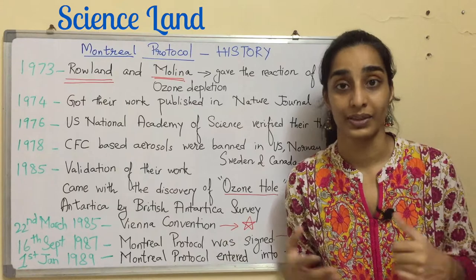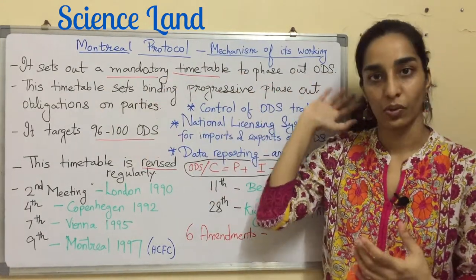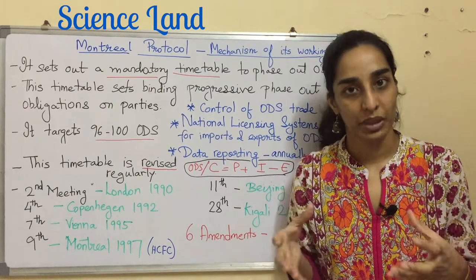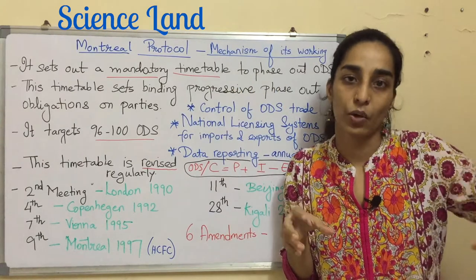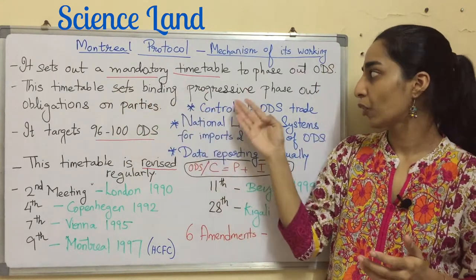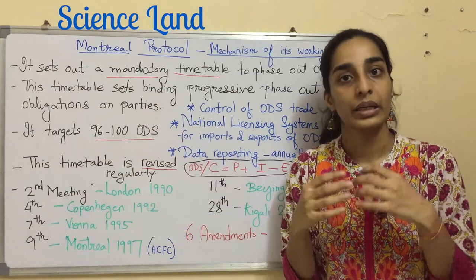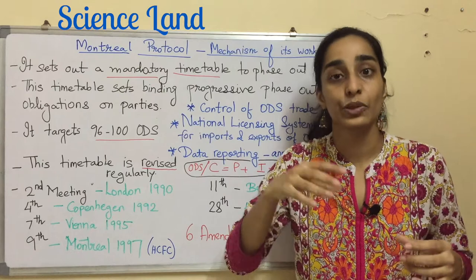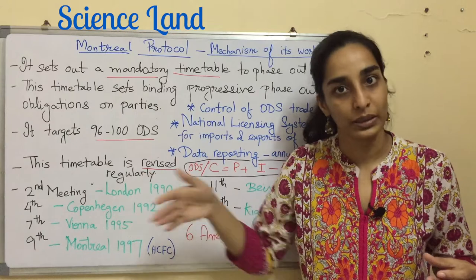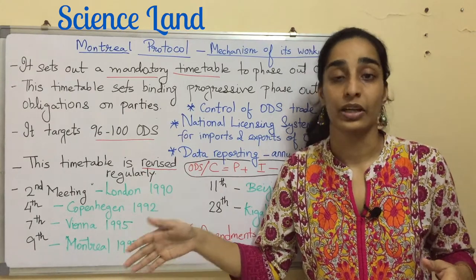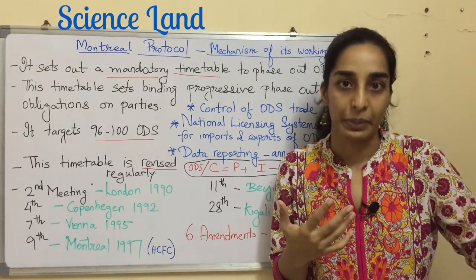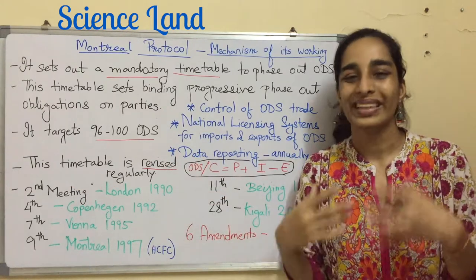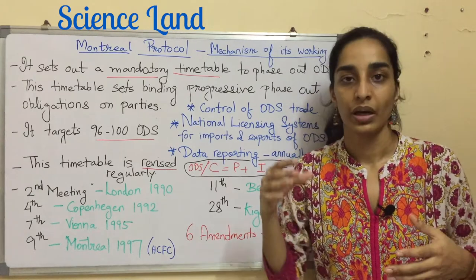Montreal Protocol sets out a mandatory timetable to phase out ODS. It's like when you work in a laboratory with an instrument, a particular SOP is given — similarly a timetable is given to reduce ODS consumption in phases. This timetable sets binding progressive phase-out obligations on the parties, asking each party to reduce a particular ODS consumption slowly and steadily — first by 25%, then 75%, and then completely freeze consumption by reducing it to 100%. Montreal Protocol targets 96 to 100 ozone depleting substances.